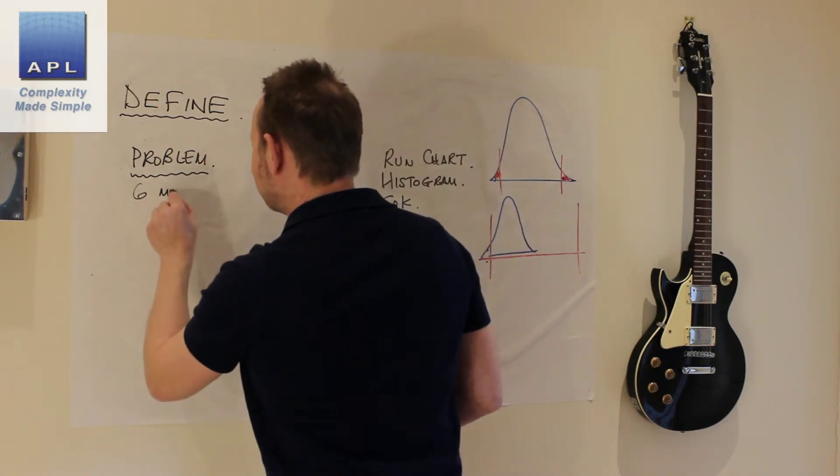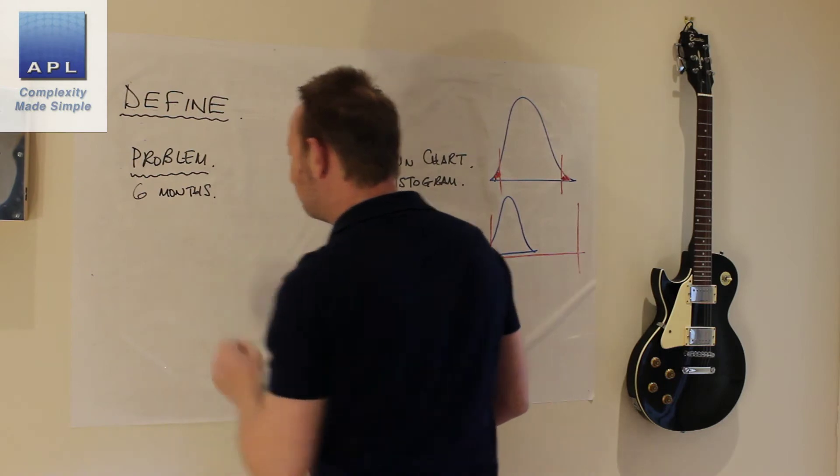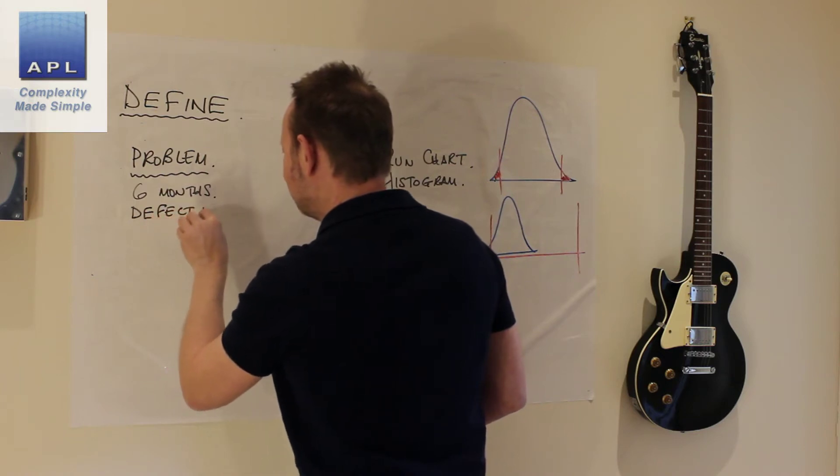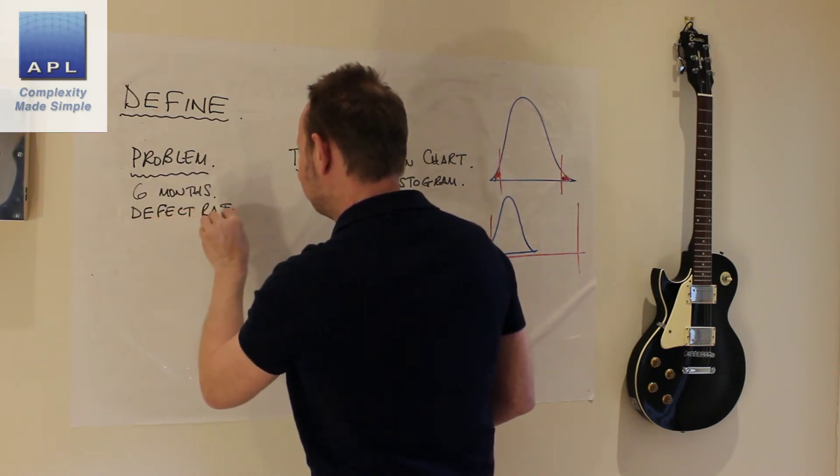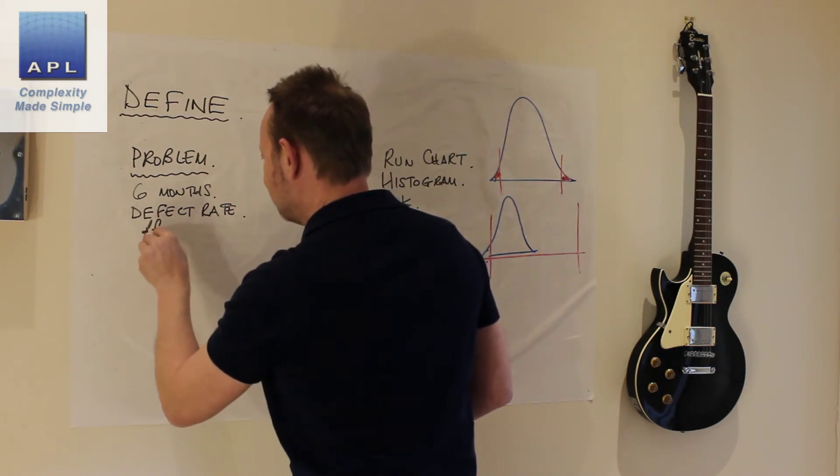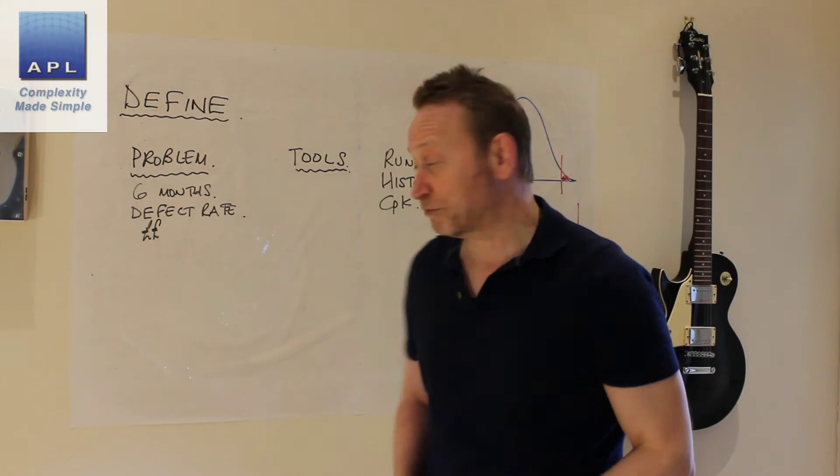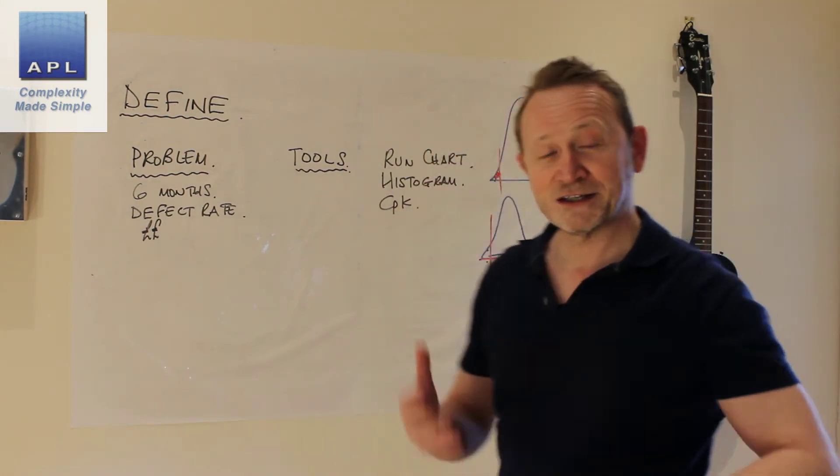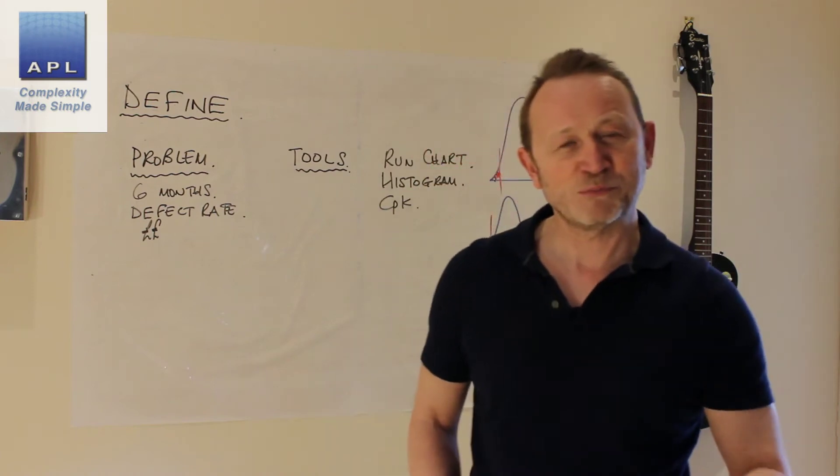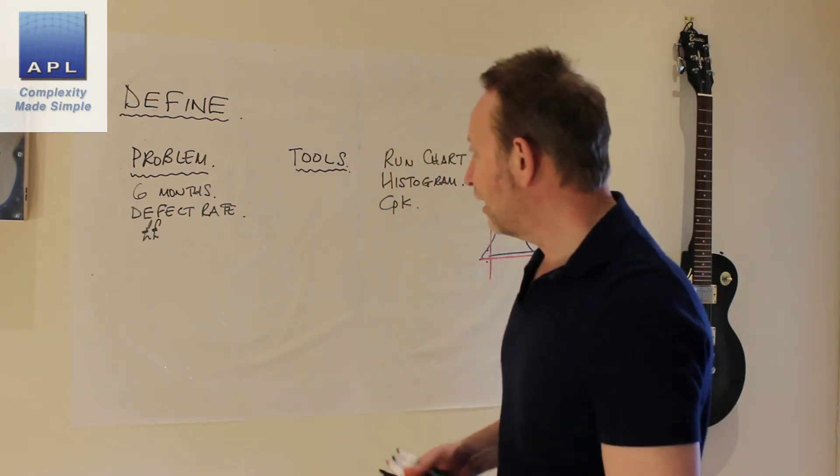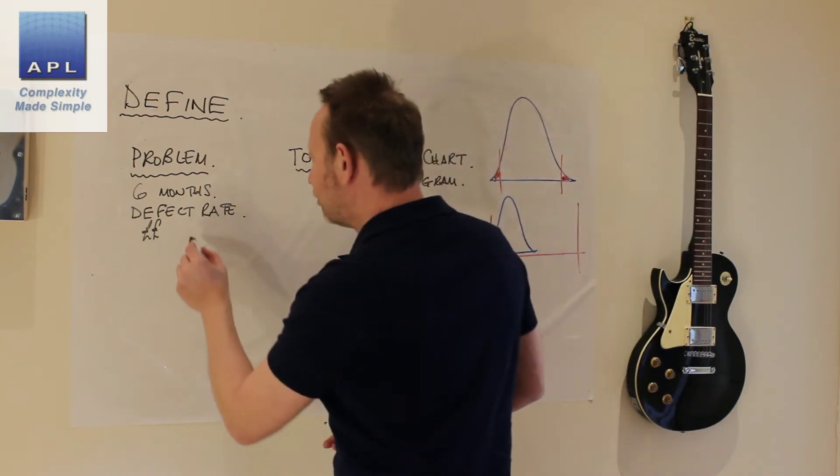It's great to look at about six months worth of data if you've got it. You want to quantify it, defect rate, you want to say how much money is it currently costing. As I say, tools you're going to use: run chart, histogram, CPK. Pretty straightforward.